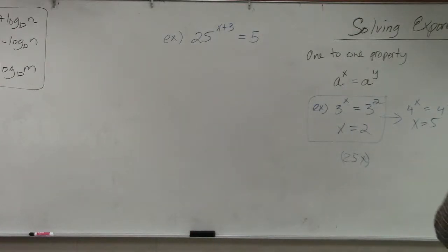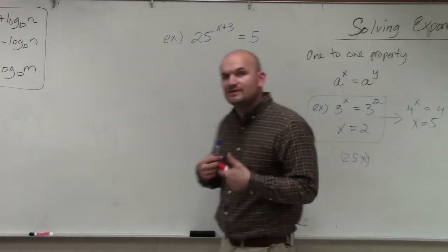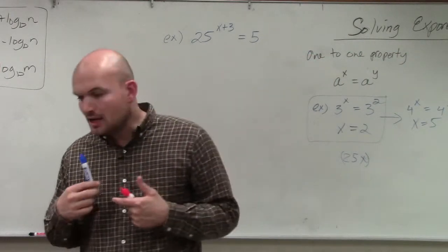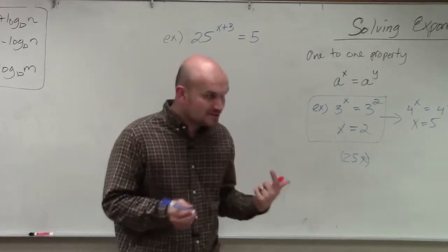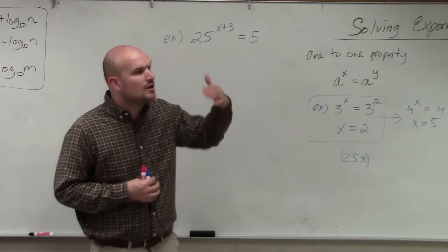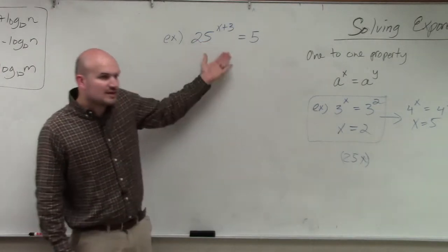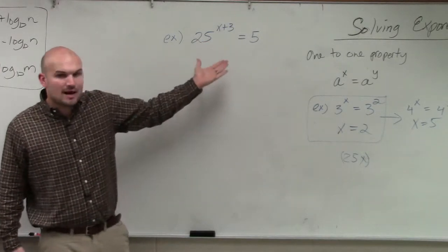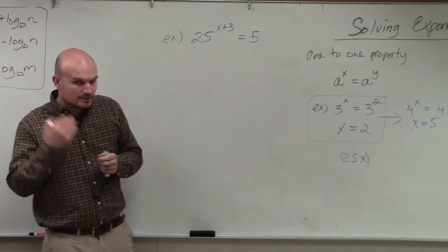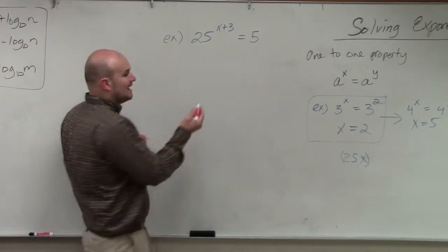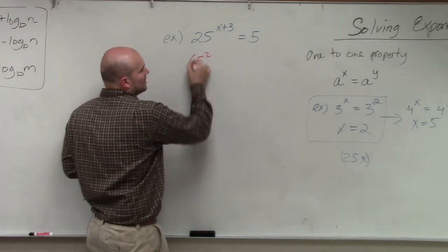So, in this example, ladies and gentlemen, again, the whole purpose of this is to be able to use the one-to-one property. Now, for us to be able to use the one-to-one property, as I mentioned, we have to be able to rewrite these both so they have the same base of 5. So what I can do is I can rewrite 25 as 5 squared.